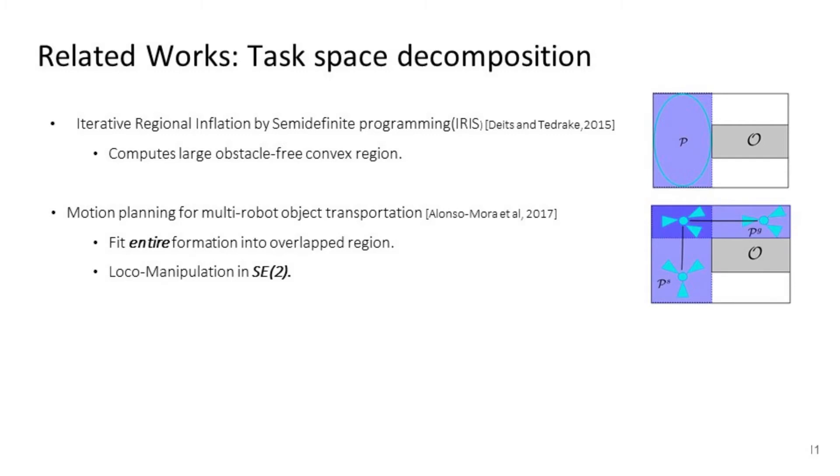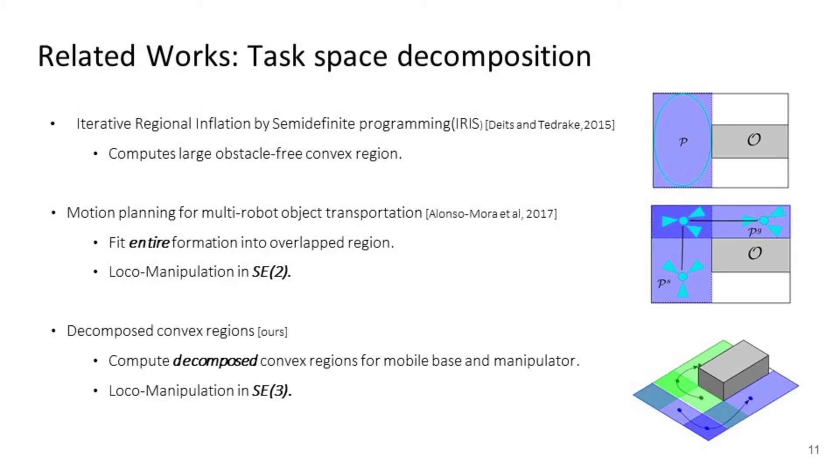Recently, Alonso-Mora presented work on motion planning for multi-robot loco-manipulation built on top of IRIS. The key insight of their work is to feed the entire formation into a large convex region. Since their approach requires that the robot team maintains a formation that does not intersect with obstacles, the object can only be manipulated in SE(2) with ground mobile-based manipulators. To overcome this drawback, we instead compute decomposed convex regions for mobile-based manipulators separately. Therefore, our planner can apply to SE(3) loco-manipulation tasks.